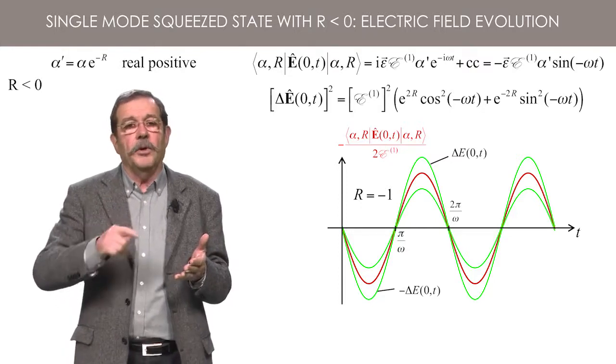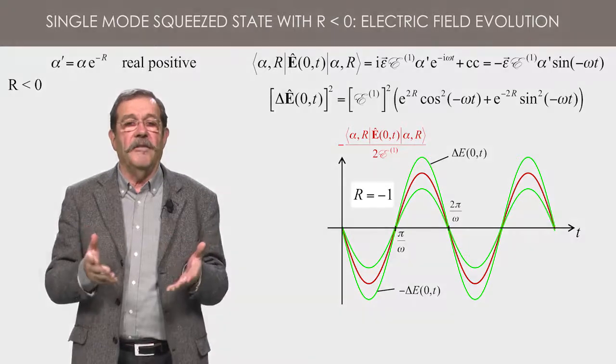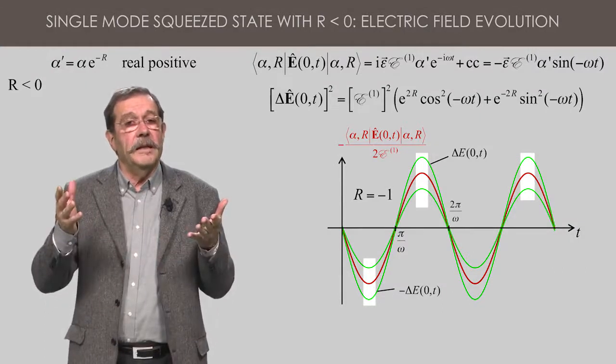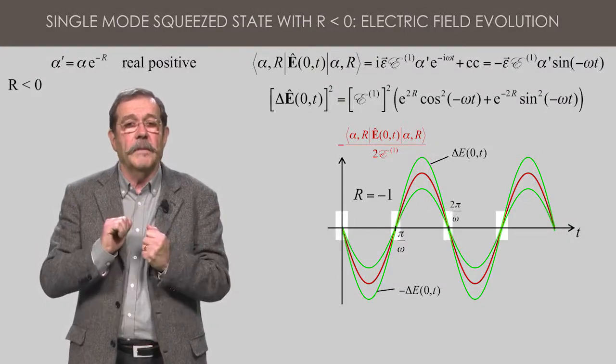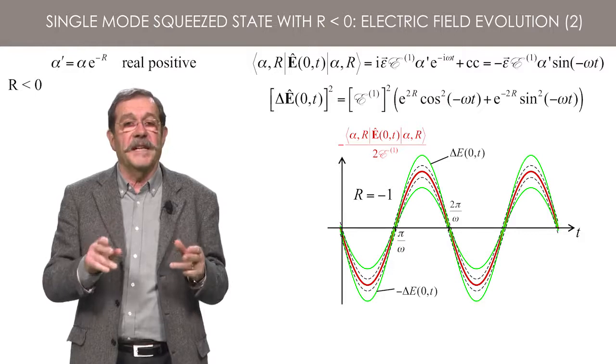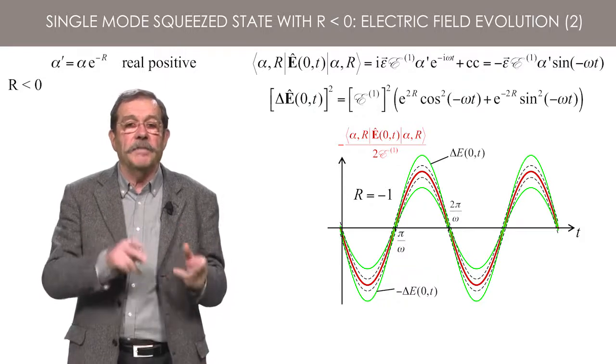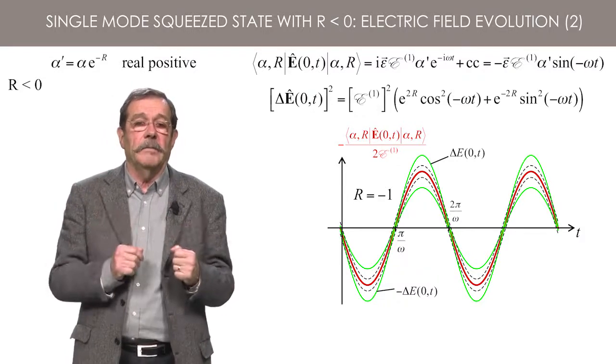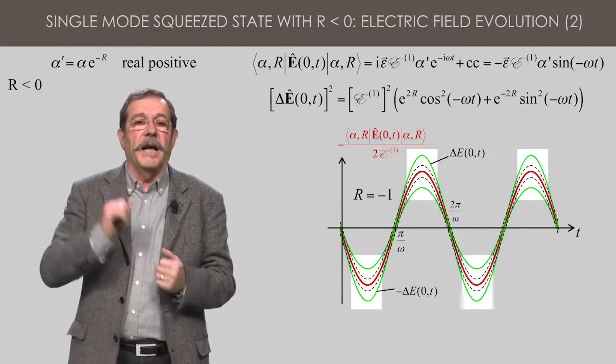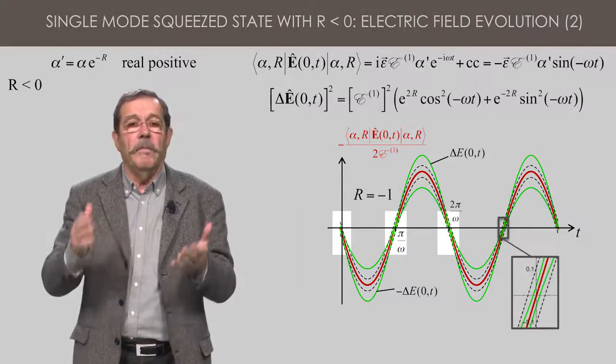I have indicated with the green curves the standard deviation added to the average field for the case of R negative. There are times when the dispersion is increased and times when it is reduced. To compare with the standard deviation that one would have for a quasi-classical state of same average value, I have added black dashed lines corresponding to a standard deviation E1. It is clear that for the squeezed state the dispersion is bigger at points pi over 2, 3 pi over 2 and smaller at points 0, pi, etc.